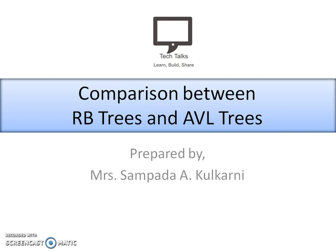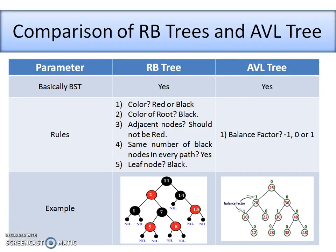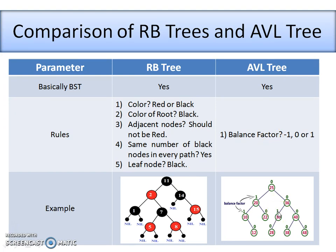So now let's start with the comparison. I am going to divide my slide into three different columns. The first column is the parameter on which I am going to compare the Red-Black tree and the AVL tree. Different parameters are shown and accordingly what the Red-Black tree does and what the AVL tree does will be explained in the second and third columns respectively.